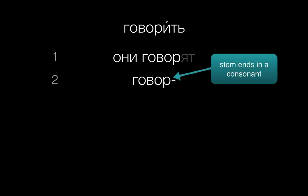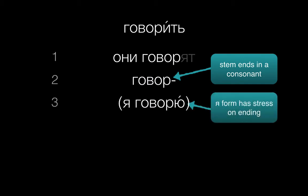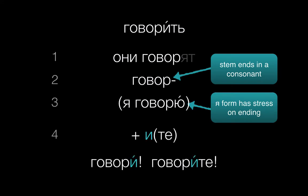Let's look at говорить. We'll start with the они form, the third-person plural. We'll drop the ending, and now we're left with a consonant at the end, and that means we need to check one more thing — the stress of the Я form. Я говорю. When the Я form is stressed on the ending, on that last syllable, then we'll add И to the stem, to get говори, or, for plural and formal, говорите.